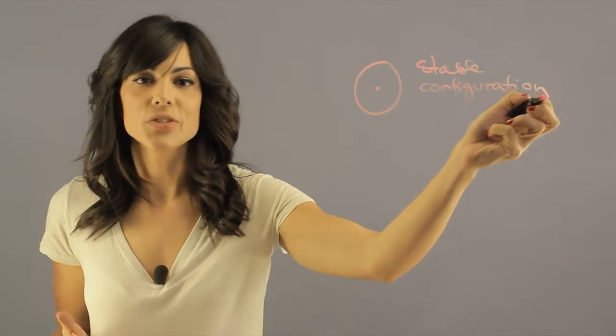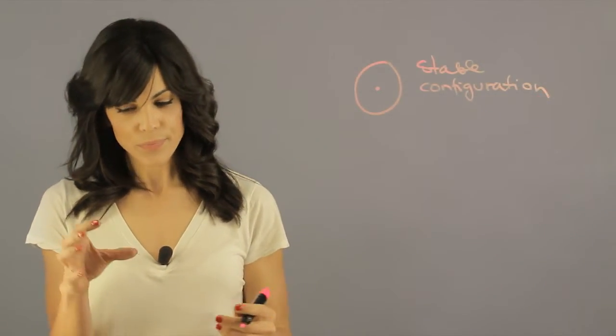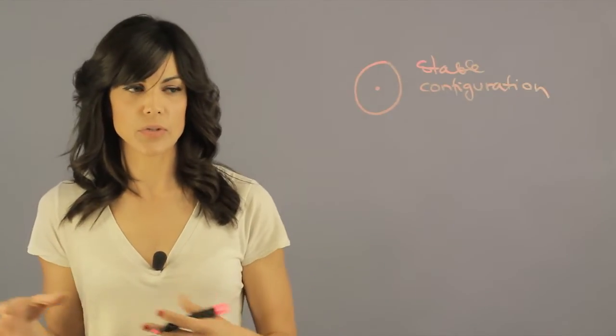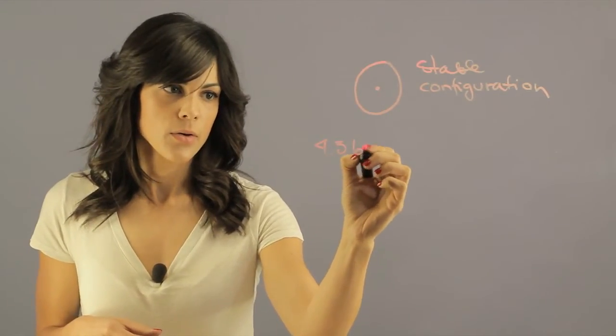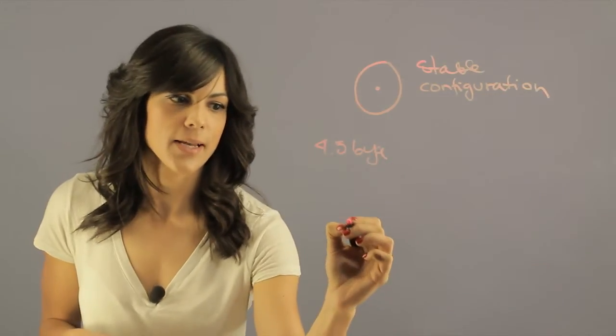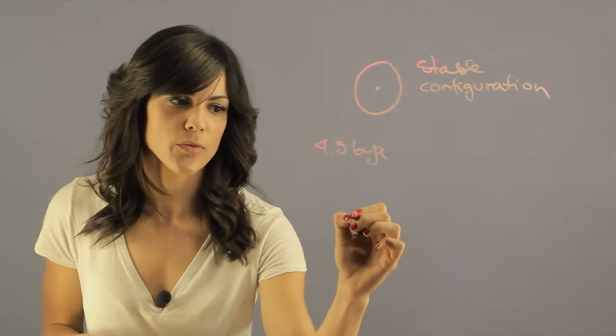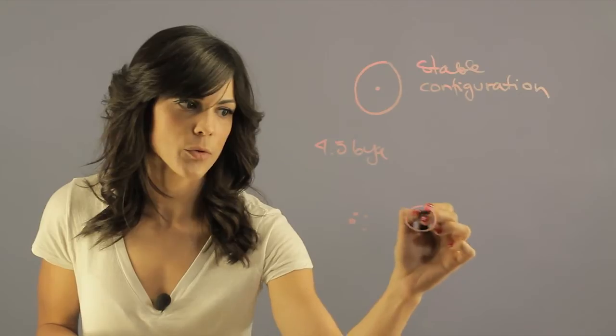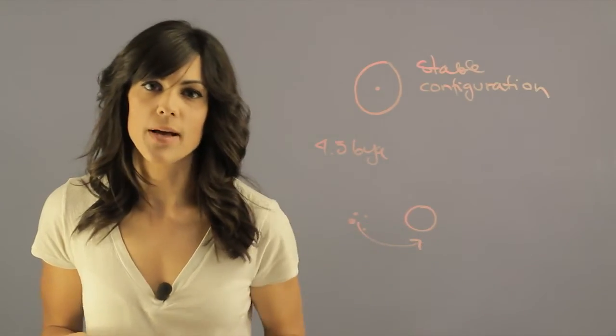Now gas giants formed during the beginning of the solar system 4.5 billion years ago, and you had this planetesimal. We start with a bunch of collisions of things around a central mass, and this is orbiting the central mass.